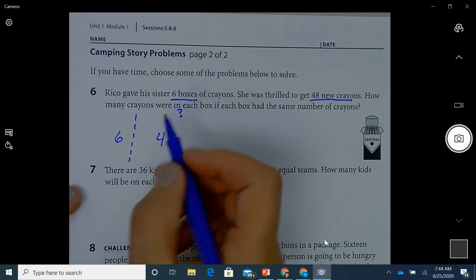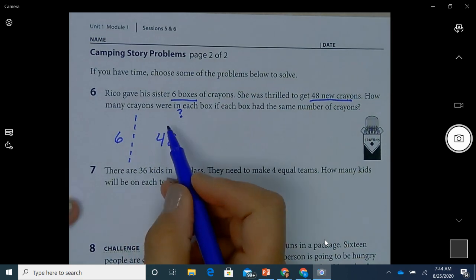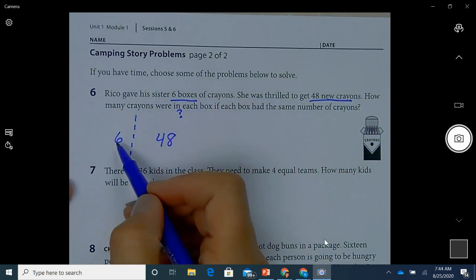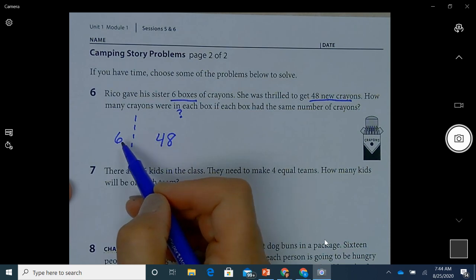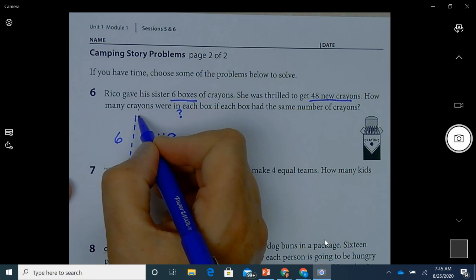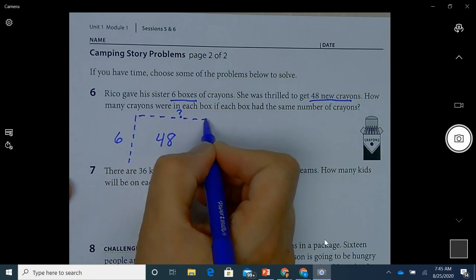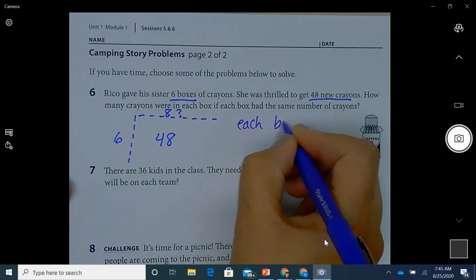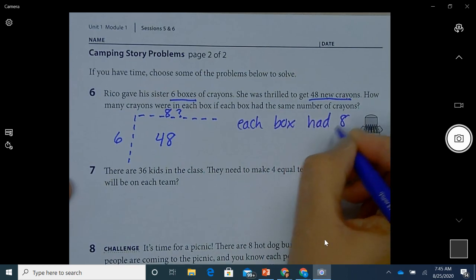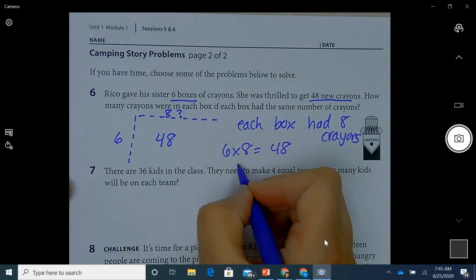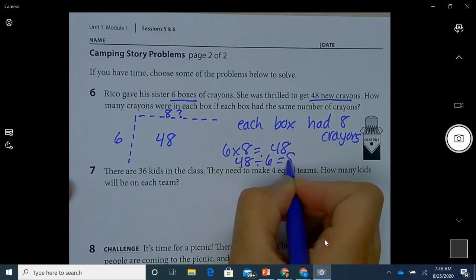Well, you might have figured out that if I have, and what I'm looking for is how many groups of six does it take to get to 48. Okay. Well, I know that six times two is 12, six times three is 18, six times four is 24, six times five is 30, six times six is 36, six times seven is 42, and six times eight is 48. So one, two, three, four, five, six, seven, eight. So there were eight crayons. So each box had eight crayons. And I can show that equation by either six times eight equals 48, or 48 divided by six equals eight.